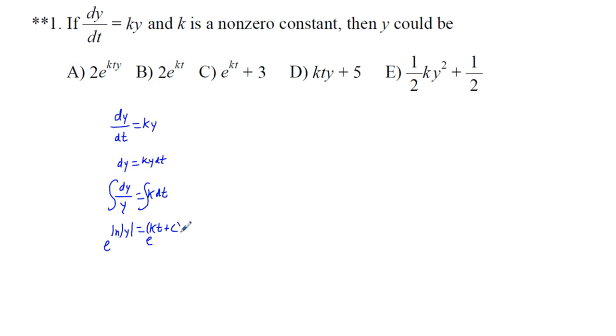And exponentiating both sides to the e, we're going to get y equals e to the kt plus c. And working to the right, we're going to end up with y is equal to e to the kt times e to the c. And continuing to work to the right, we can simplify that to y equals big C times e to the kt. And now we can glance up and look at our potential answer choices, a through e.